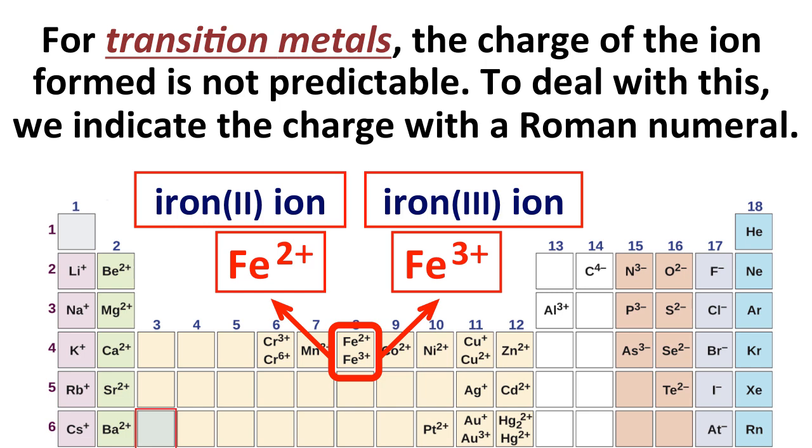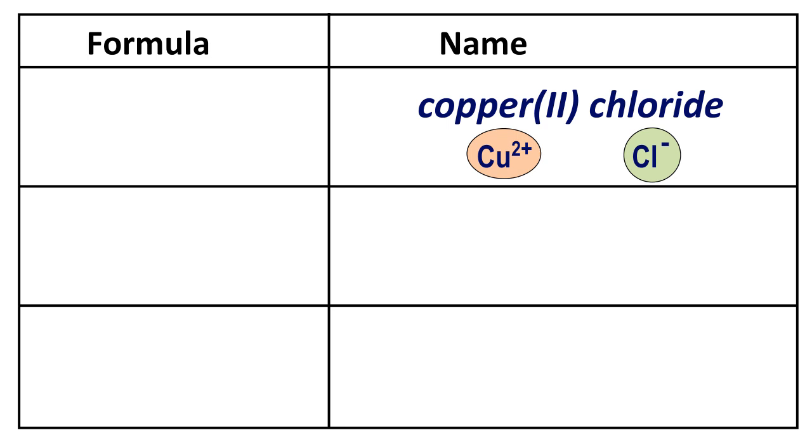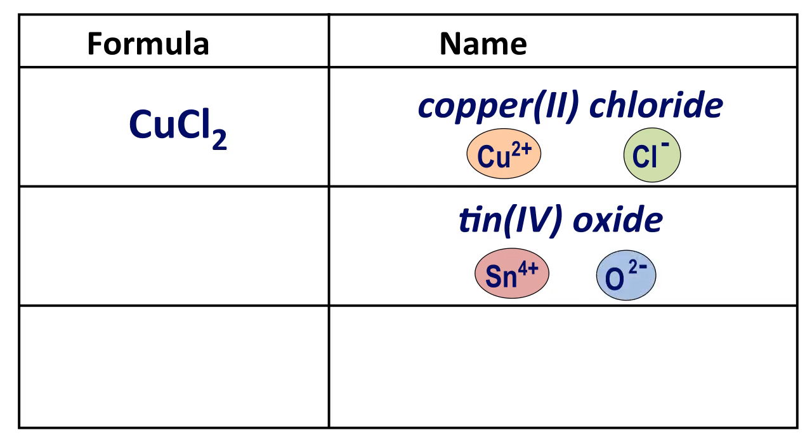If we have the formula, we can figure out what the charge of the ion would be from the formula. A couple examples of this. How would we write the formula for copper two chloride? Well, copper Roman numeral two means it's a plus two charged ion. Chloride is a minus one charged ion. We need two minus ones to balance a plus two. So we would write the formula as CuCl2. Tin four oxide. Well, tin is Sn and it would have a plus four charge. Oxide is a minus two ion. So we need two minus twos to balance one plus four. So you might think we're going to write Sn2O4. But with ionic compounds, we always reduce them to simplest ratios. So a ratio of two to four is the same as a ratio of one to two. So we would actually reduce this to SnO2.